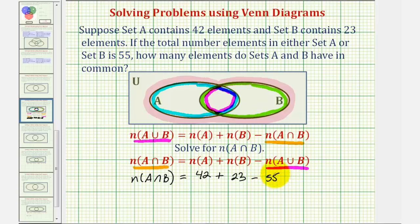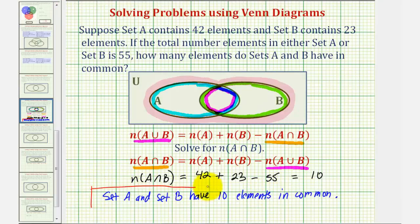This gives us 65 minus 55, which equals 10. And therefore, set A and B have 10 elements in common. I hope this was helpful.